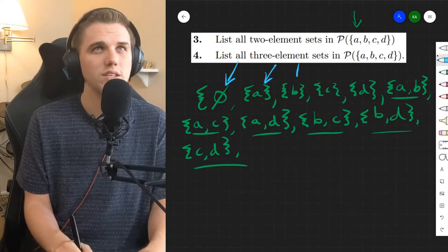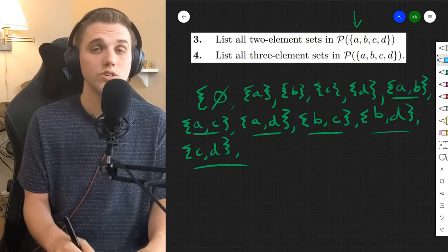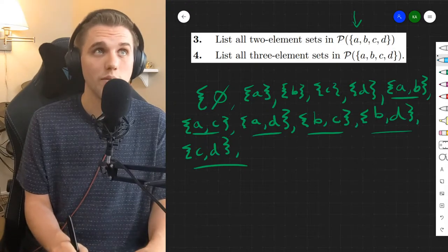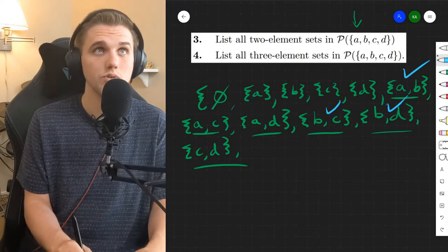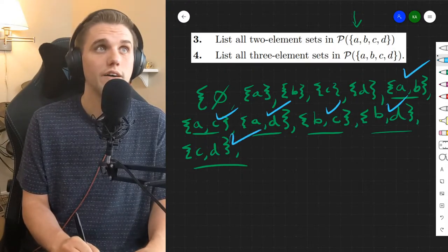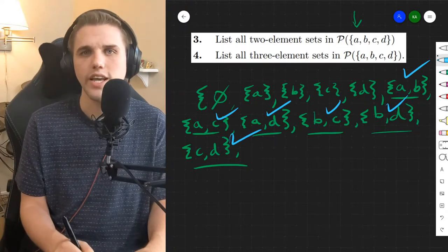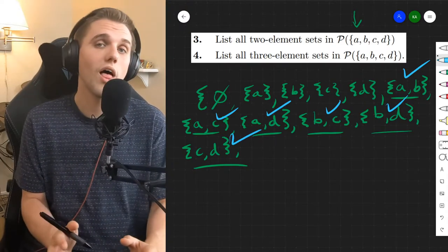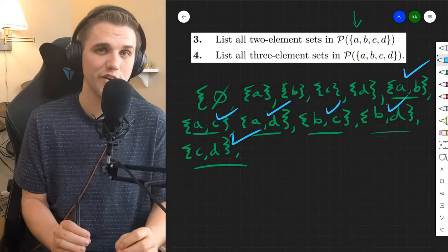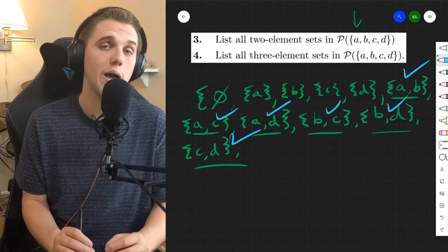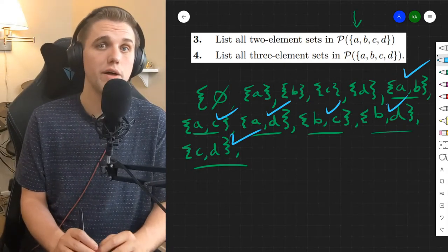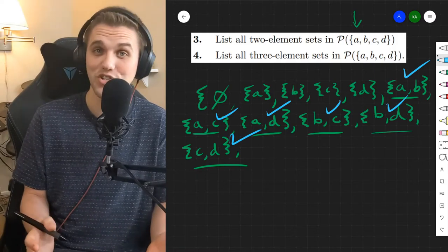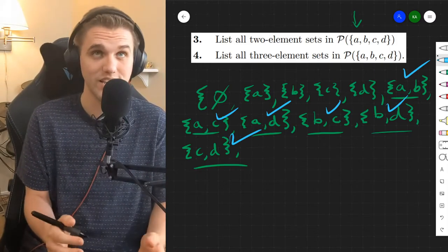But then how many sets, or subsets I should say, have two elements? Well, we said six. One, two, three, four, five, six. But why six? Where does six come from? We'll actually address this specific question multiple times throughout discrete math, but for now just know that the answer is six because that's what we counted.